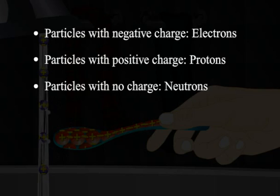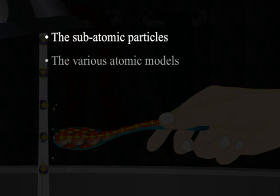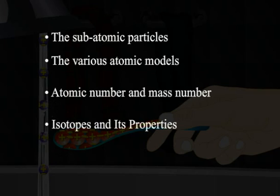Through this chapter, let us gain an understanding of the subatomic particles, the various atomic models, atomic number and mass number, and isotopes and their properties.